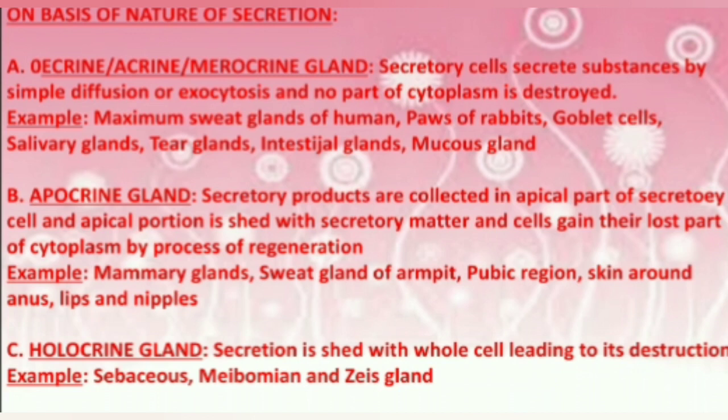Examples of apocrine glands include sweat glands of the armpit and pubic region. Third is the holocrine gland, where the secretion is packaged with the whole cell, leading to its destruction. Examples include the sebaceous gland, Meibomian gland, and Zeis gland.